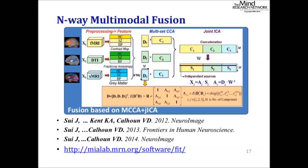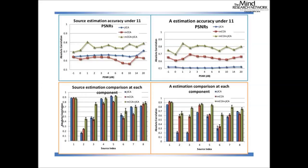This demonstrates multi-modal covariation — regions that are remotely connected in function are connected by white matter tracts, identified simultaneously. That is a two-way examination. We can extend this method to combine from two to N modalities. Using the N-way multi-modal framework when combining three modalities is very similar to the two-way approach, and we have published several papers using this method.